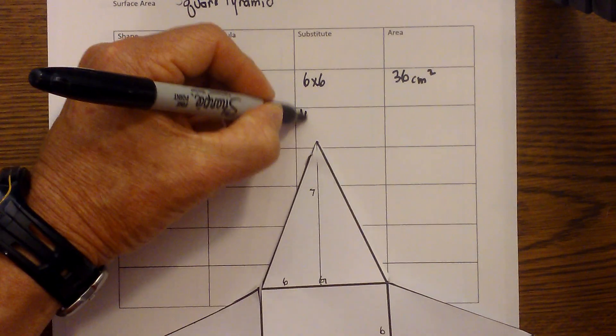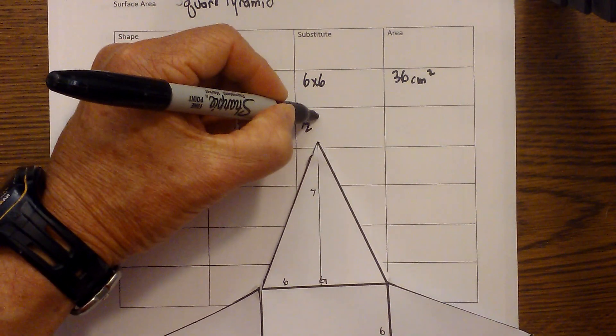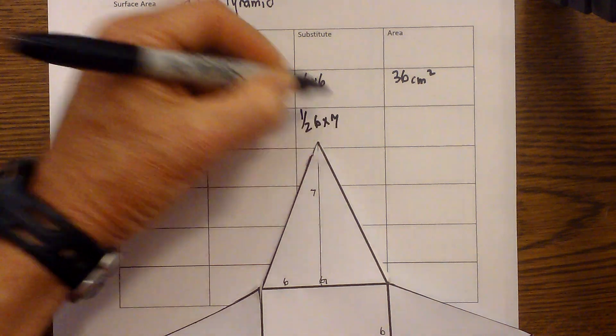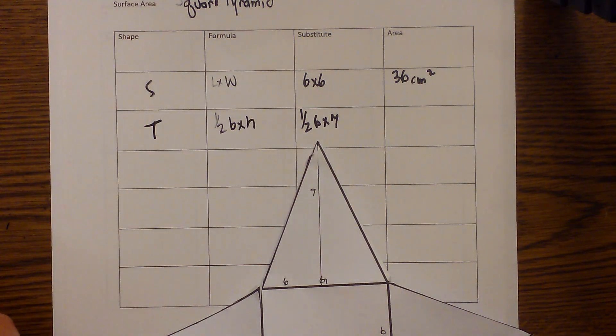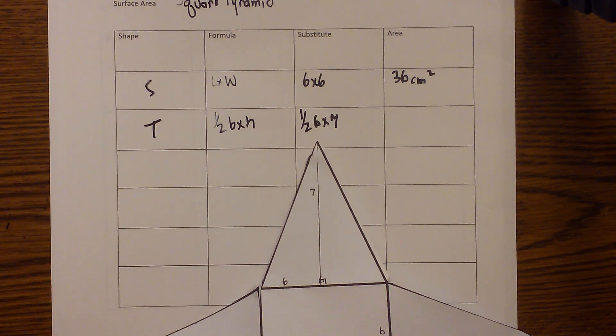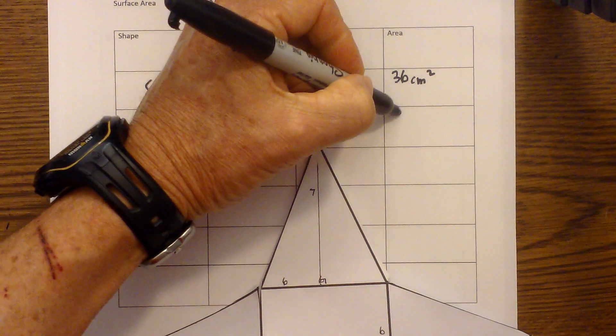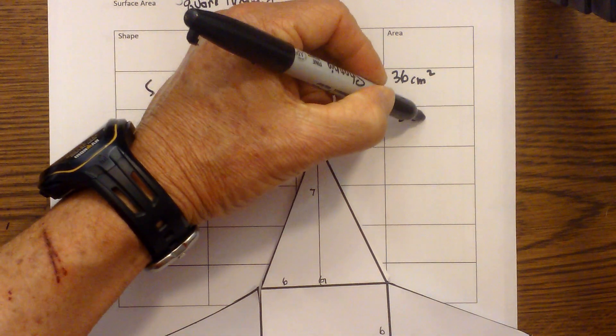So I'm going to go one half base is 6 times the height of 7 and I'll turn on my trusty calculator. And that is 6 times 7 is 42 times one half and that is 21. So that is 21 centimeters squared.